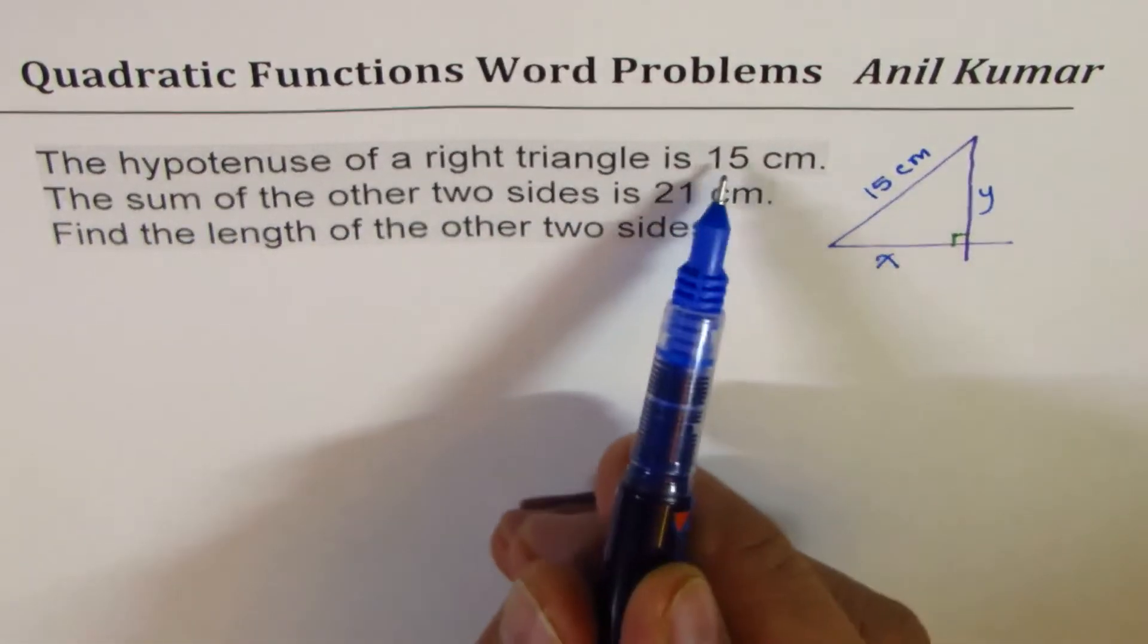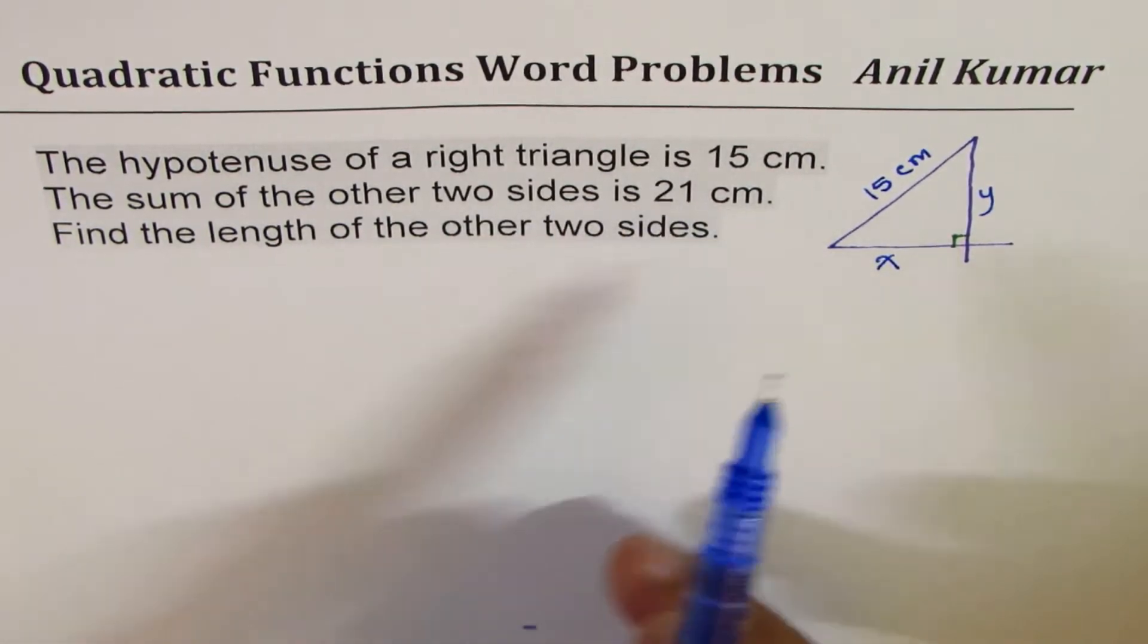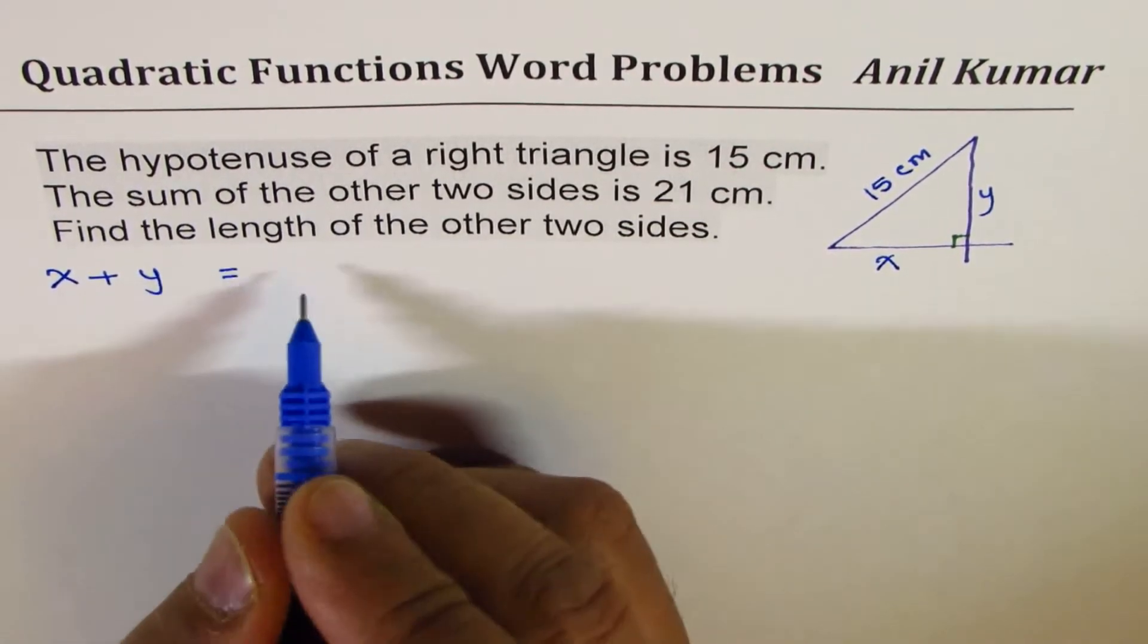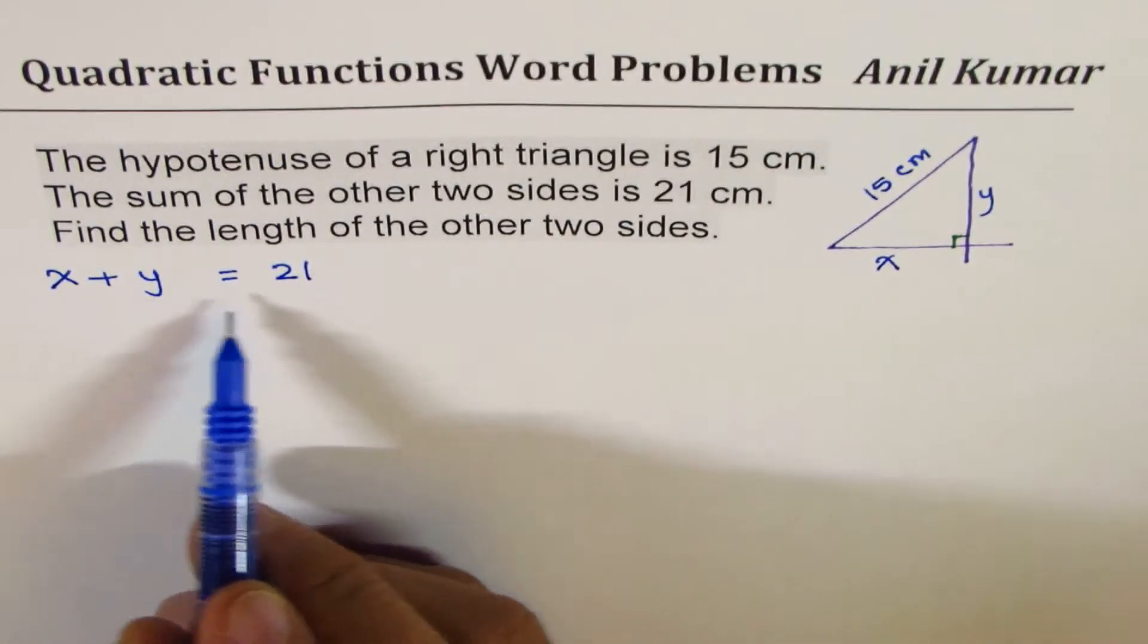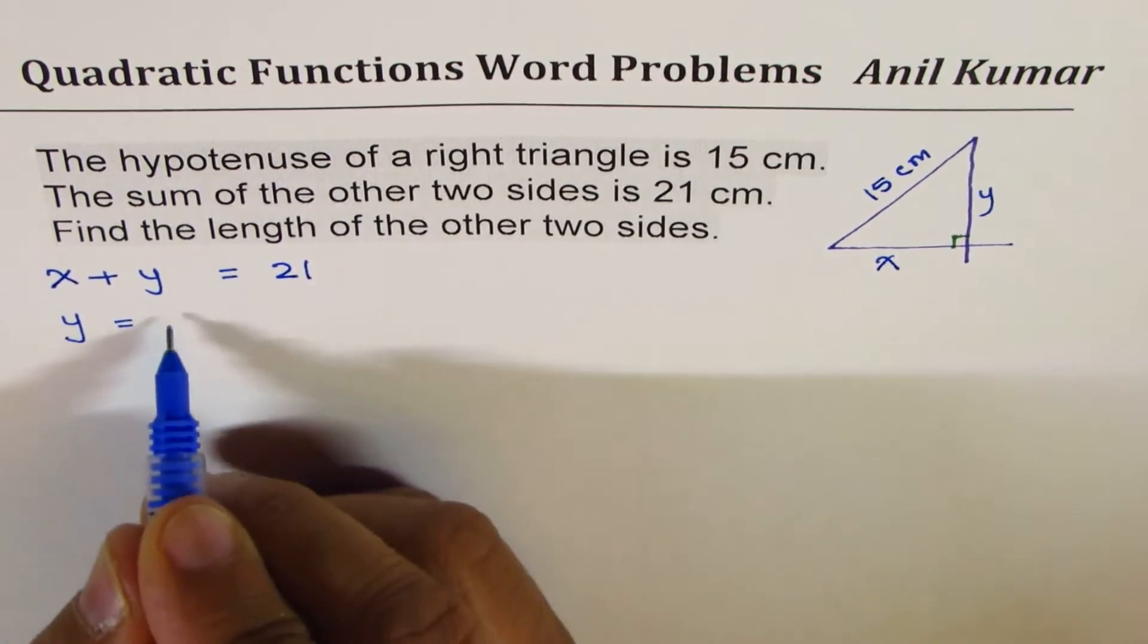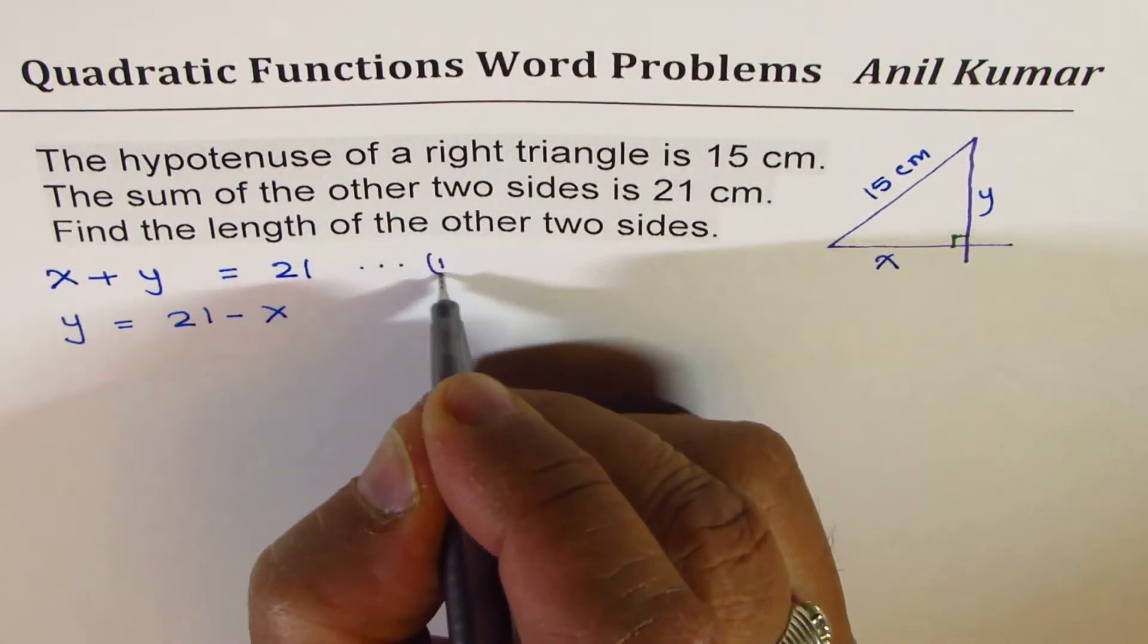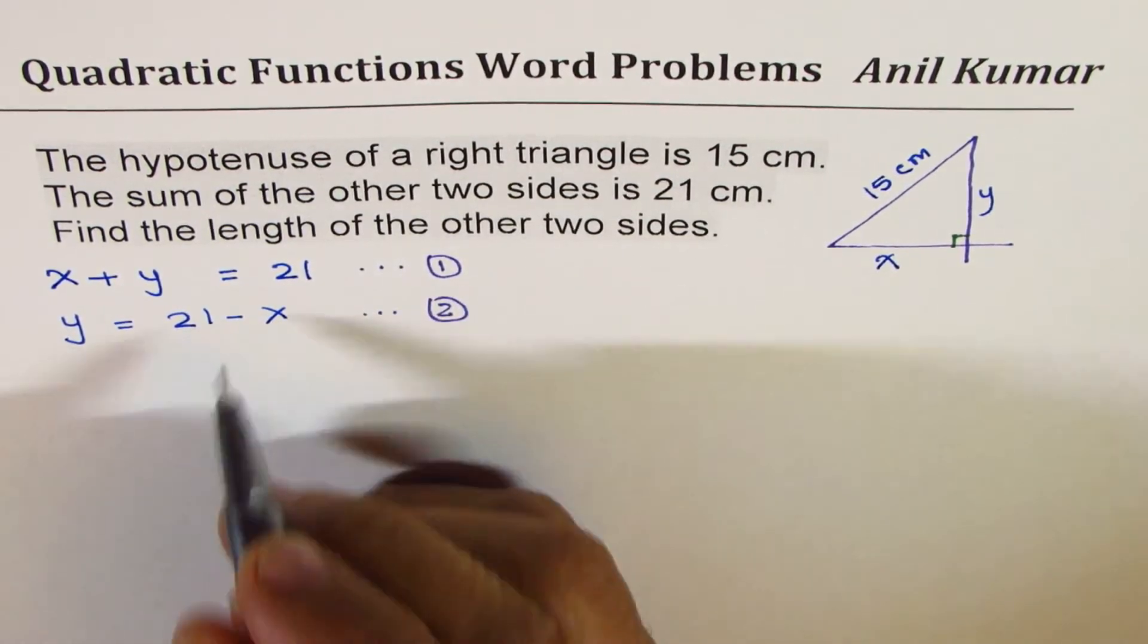We have already written 15 centimeters for the hypotenuse. The sum of the other two sides is 21. The other two sides are x and y, so we'll write our equation: x + y = 21. Now, you could write one in terms of the other. Let's write y = 21 - x. This equation relates y with x. Since there are two variables, we need two equations to solve.